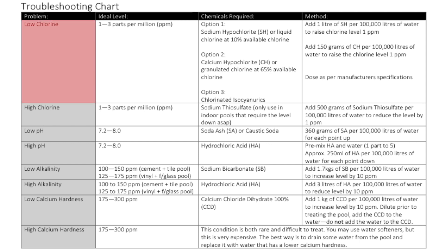The ideal level that you want the free chlorine to be is one to three parts per million — that's a world standard. The main chemical listed is sodium hypochlorite, which is liquid chlorine, at a concentration of around 10 to 14%. You'll need to add one litre of liquid chlorine per 100,000 litres of water to raise the chlorine level by one part per million.